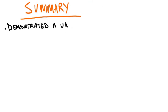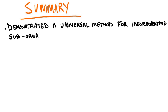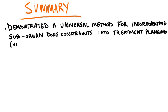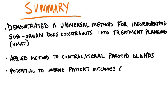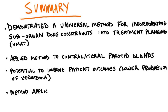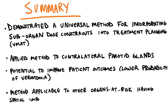In summary, a universal method for incorporating sub-organ dose constraints into VMAT treatment planning has been demonstrated as an effective means of steering dose away from important regions of the parotid gland. This method may also be applied to other organs at risk for which spatial importance data exists.